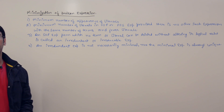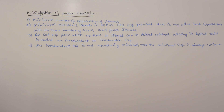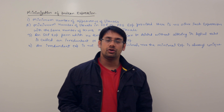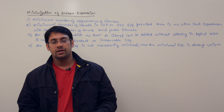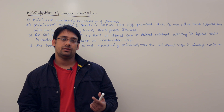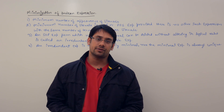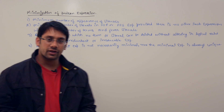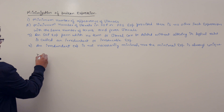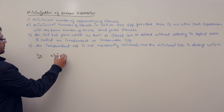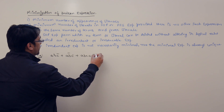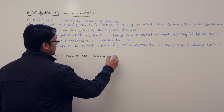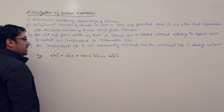Let us look at what is minimization of boolean expressions. When we minimize a boolean expression, we want to minimize the number of literals in that expression, as well as the number of sum of product terms or product of sum terms. For example, if we have an expression like: ABC' + AB'C + ABC + A'B'C + AB'C'.